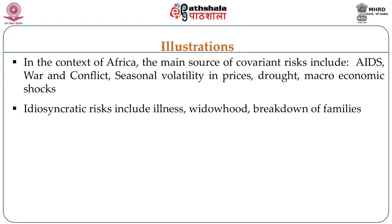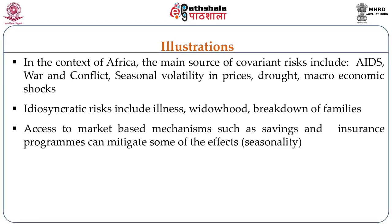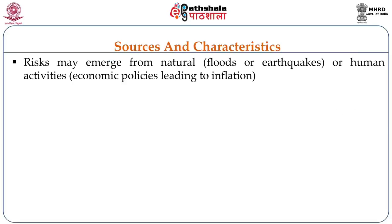Idiosyncratic risks, on the other hand, could include illnesses or death of the adult male member of the family or breakdown of families. Access to market-based mechanisms such as savings and insurance programs can mitigate some effects of risks which are seasonal or covariant. Risks may also emerge from natural hazards such as floods or earthquakes, or from human activities such as economic policies leading to high inflation of food prices.